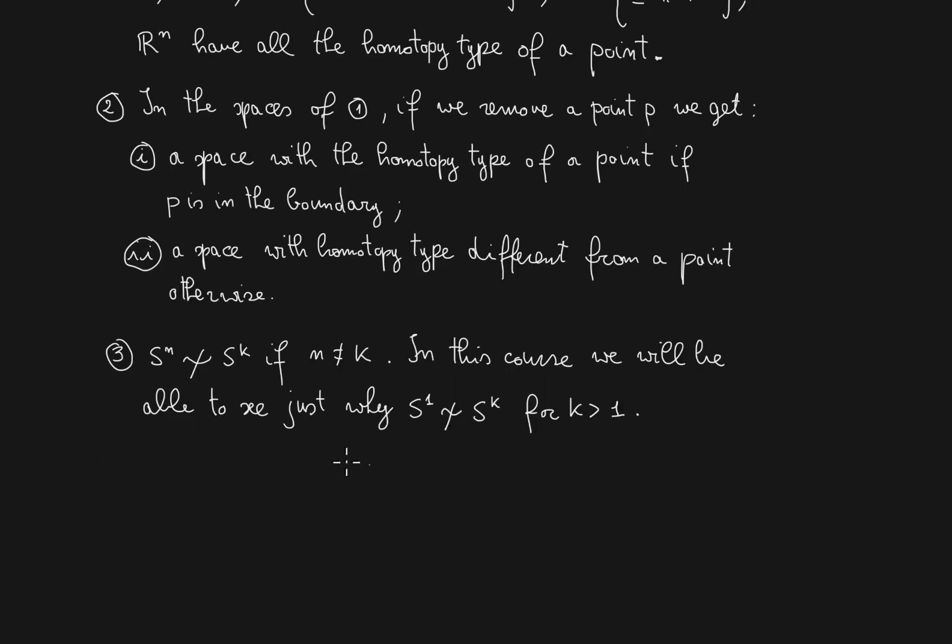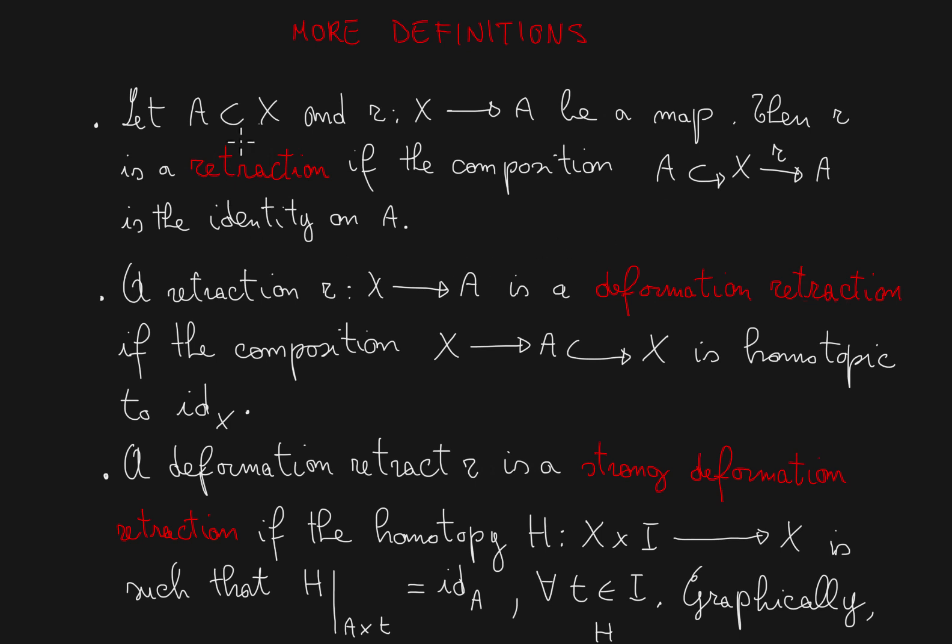Finally, let's consider the last example. We always have that the n-dimensional sphere Sn has never the homotopy type of the k-dimensional sphere Sk if n is different from k. In this course, we will be able to see this fact just for S1 and Sk for k different. The statement for any other spheres requires results that will not be covered in the course.